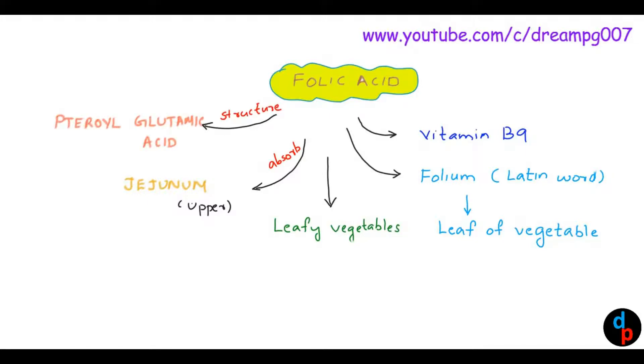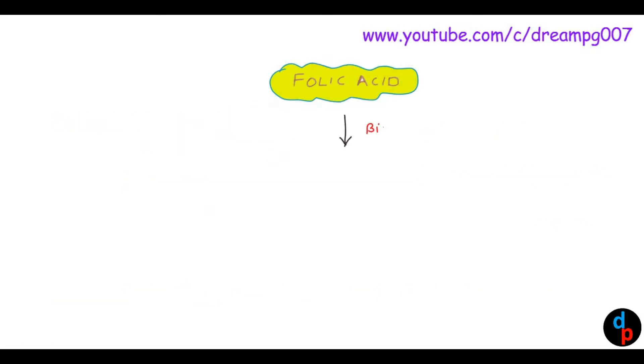An important point that you have to remember is that the active form of folic acid is tetrahydrofolic acid, THFA. There are different methods to determine the deficiency of folic acid in the human body. The most important method is the serum folic level determination.